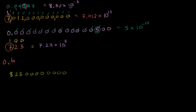For 0.6, the first non-zero term is 6. So it's going to be 6 times 10 to the minus 1, since we have only one position to the right of the decimal. That makes a lot of sense, because that's essentially 6 divided by 10 — 10 to the minus 1 is 1 over 10, which is 0.6.